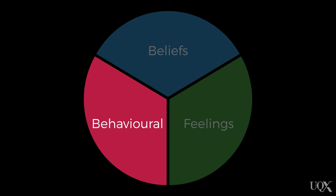The final component is the behavioural component of prejudice. This is what the word discrimination refers to. People who are the target of prejudice are being denied opportunities. They're treated badly because of their disability, their gender, their sexuality, and so on. So these are the three components of prejudice.